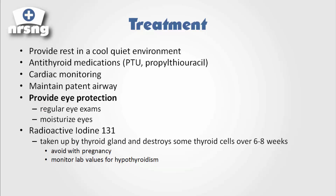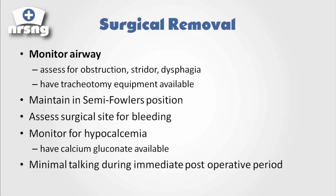Another treatment option is radioactive iodine. The thyroid gland likes to take up iodine — that's why we started iodizing our salt, because a large portion of the US population was developing goiters, and adding iodine to salt helped prevent that. With radioactive iodine therapy, we provide the patient radioactive iodine, the thyroid gland takes it up, and that radioactive iodine starts to destroy thyroid cells over six to eight weeks. We avoid this in pregnancy and we monitor lab values for hypothyroidism, because if we destroy too many thyroid cells we can then cause hypothyroidism.